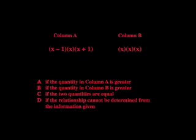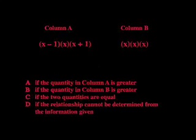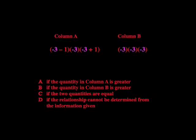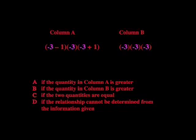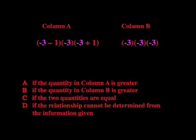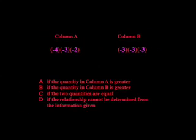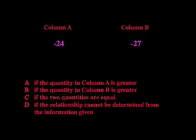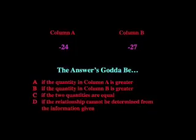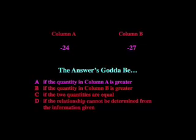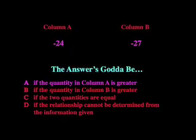But some people realized they never said x was a positive number, so they were quick to substitute a negative number, like negative 3. Column A becomes negative 4 times negative 3 times negative 2, which equals negative 24, and column B becomes negative 3 to the third, which equals negative 27. These clever students said the answer's gotta be A — the quantity in column A is greater, because negative 24 is greater than negative 27.